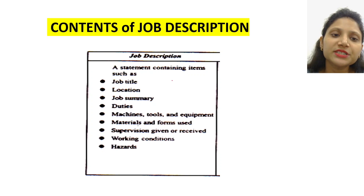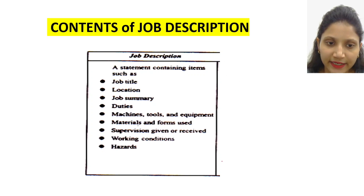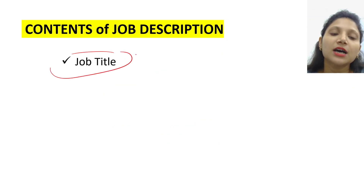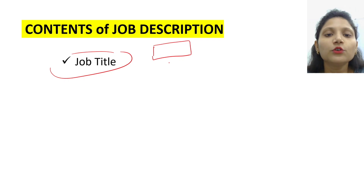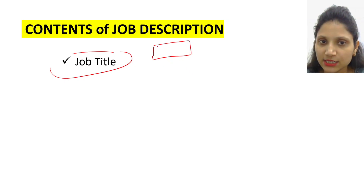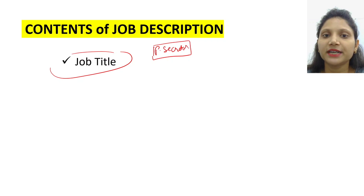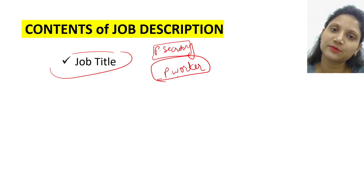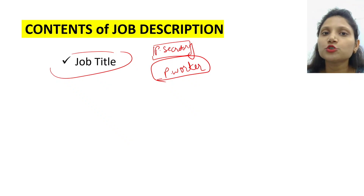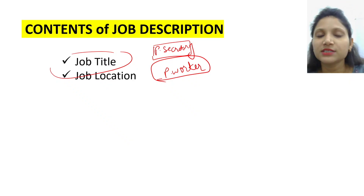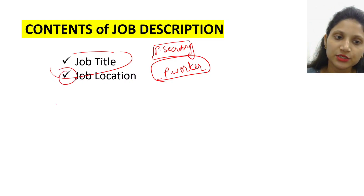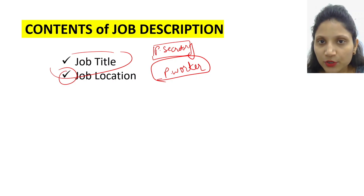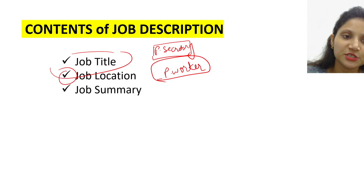Job description ke contents ki baat karein to kuch is type ke contents aapke rahenge. First aapka jata hai job title — ek aisa specific title rakhna hai jo meaningful ho, wohi se convey ho jaye ki us job ke andar kya hai. Jaise 'personal secretary' ya 'production worker' — koi bhi job title jo self-explanatory ho. Uske baad job location — organization ki kis department me woh job ho rahi hai, kis machinery pe us job ko karna hai. Uske baad ek summary provide karte hain.